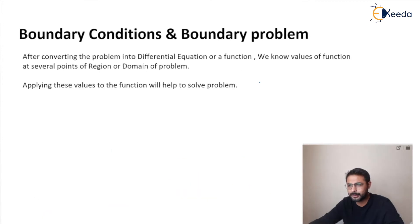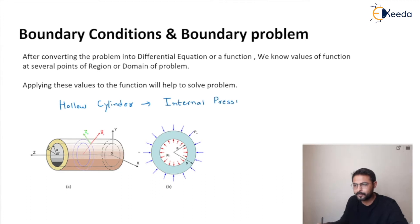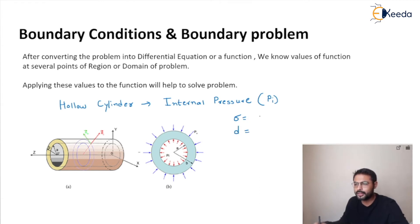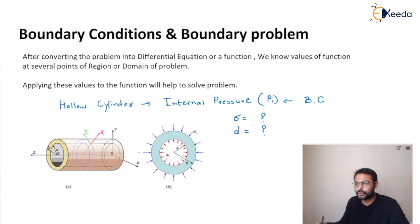Let us understand it by one more example. Here this is a hollow cylinder which is subjected to internal pressure, indicated by Pi. We want to find out the stresses produced inside it and the displacement of various points — these are the unknown values. We know the internal pressure value, which is the boundary condition, and we want to find out the unknowns like stresses and displacement.